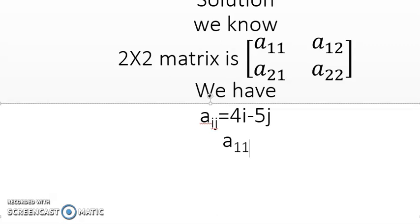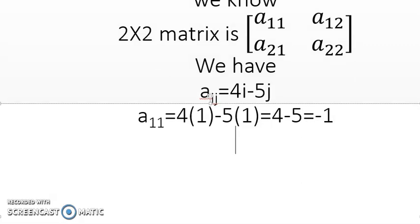A_11, so this means 4 times - this i means 1, j means also 1. The first represents i and the second represents j, so 4(1) minus 5(1). This will be 4 times 1 is 4 and 5 times 1 is 5, which equals to minus 1.